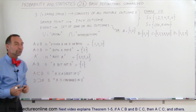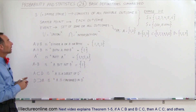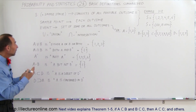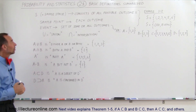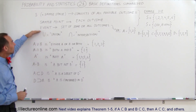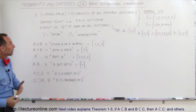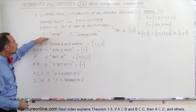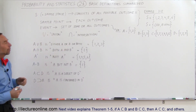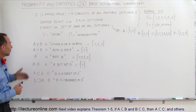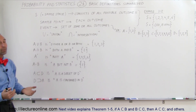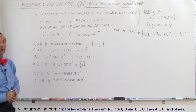So now you have a nice overview of the basic concepts of probability: the sample space, the sample point, the outcome, and the event. A sample point is each outcome; an event is the set of some or all outcomes. And we've covered the symbolism — union, intersection — and based on the various examples of events, you can see what these symbols stand for and how you find the solution. On to the next video.